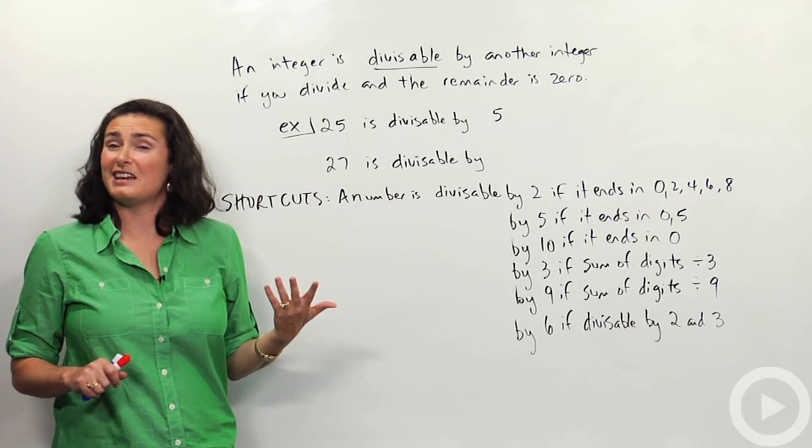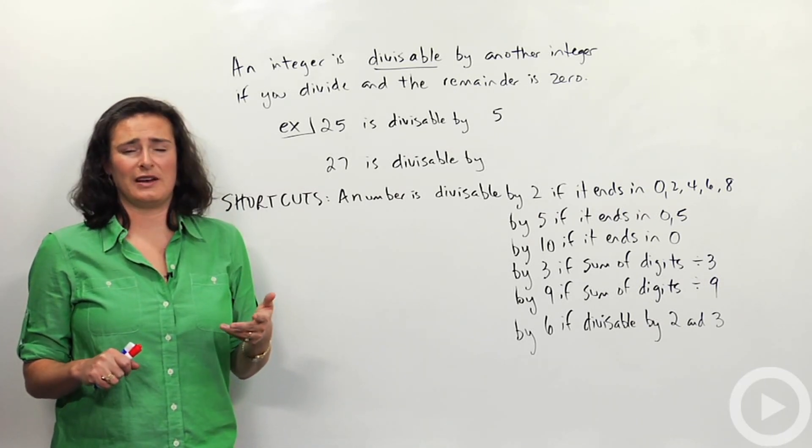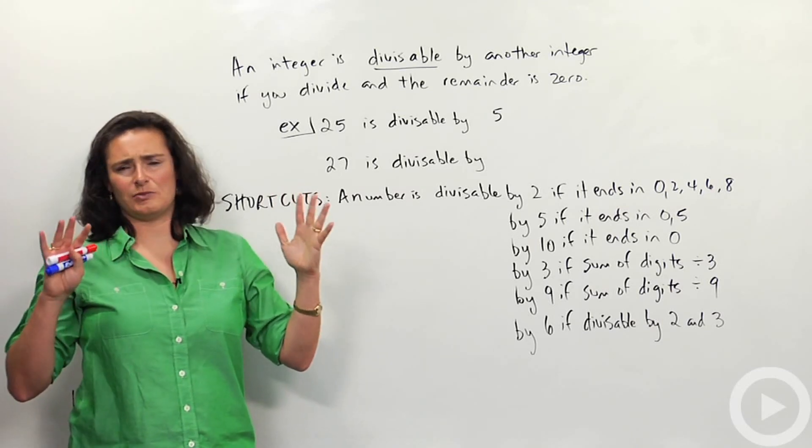Whereas if I do 25 and 6, 25 is not divisible by 6, because if I do 25 divided by 6 on my calculator, I get some weird decimal.